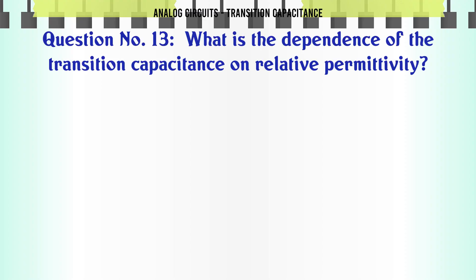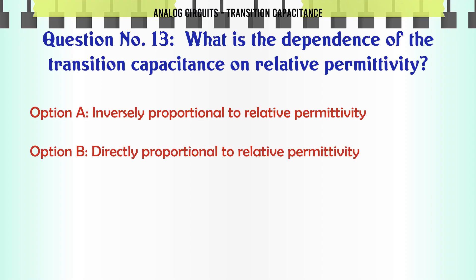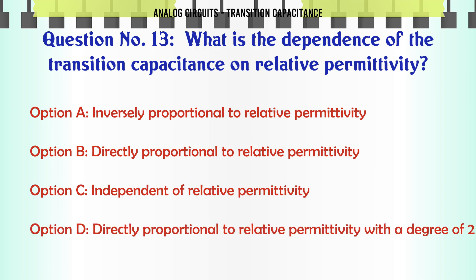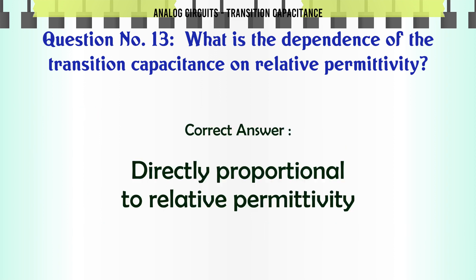What is the dependence of the transition capacitance on relative permittivity? A: Inversely proportional to relative permittivity, B: Directly proportional to relative permittivity, C: Independent of relative permittivity, D: Directly proportional to relative permittivity with a degree of 2. The correct answer is directly proportional to relative permittivity.